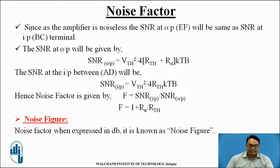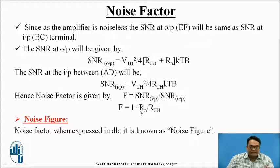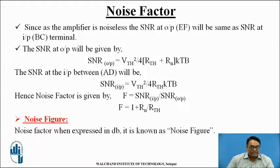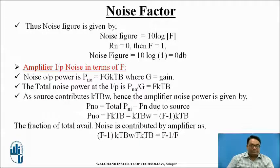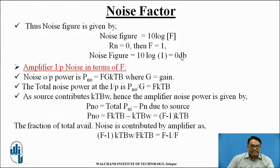From this we conclude that noise factor is directly proportional to the equivalent noise resistance Rn and inversely proportional to the Thevenin resistance Rth. When noise factor F is expressed in decibels, it is called the noise figure, given by Noise Figure = 10·log(F). When Rn = 0, F = 1, and hence the noise figure for a noise factor of 1 is 0 dB.